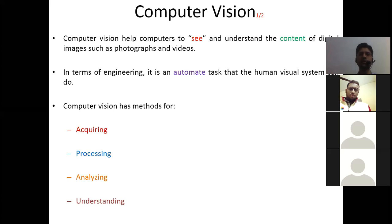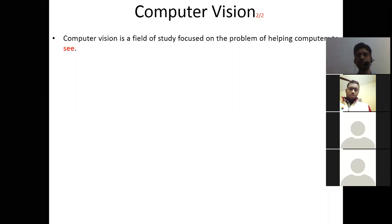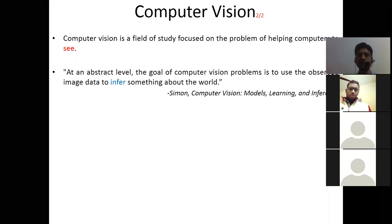Computer vision has methods for acquiring information, processing that information, analyzing that information, and then understanding it — and the information we are talking about is digital images and videos. At an abstract level, the goal of computer vision problems is to use the observed image data to infer something about the world — as written by Simon in the Computer Vision: Models, Learning and Inference book.